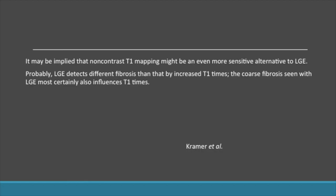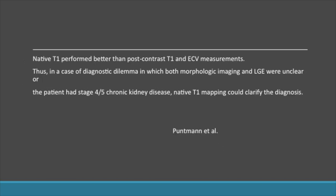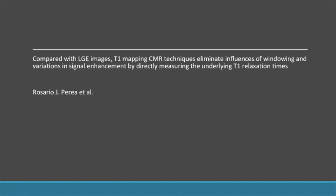It may be implied that non-contrast T1 mapping may be an even more sensitive alternative to late gadolinium enhancement. It has been shown that native T1 performed better than post-contrast T1 and ECV measurements. Compared with LGE, T1 maps eliminate the influence of windowing and variations in signal enhancement by directly measuring the underlying T1 relaxation times.